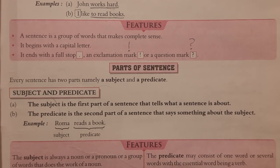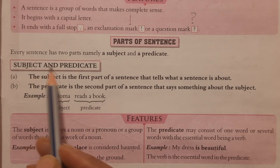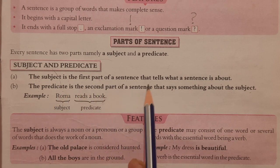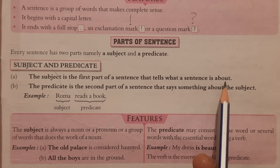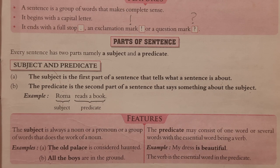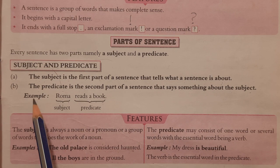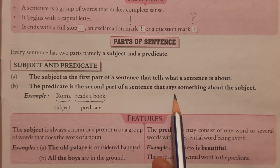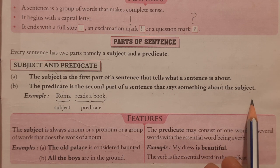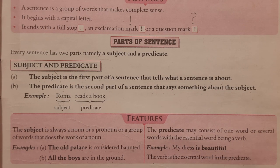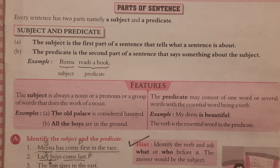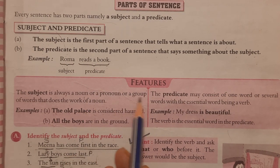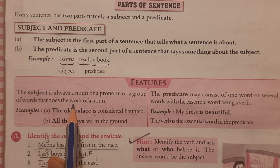There are two parts of a sentence: subject and predicate. Subject is the first part of a sentence that tells what a sentence is about — the main part about whom we talk is called the subject. Predicate is the second part of a sentence that says something about the subject. So whatever we tell about the subject is the predicate. Subject is always a noun or a group of words that does the work of a noun.